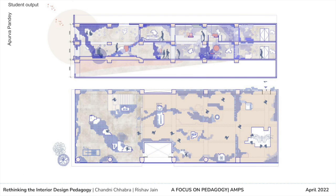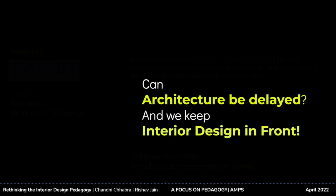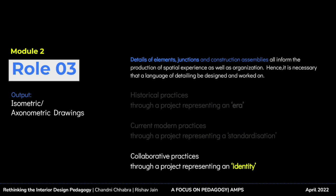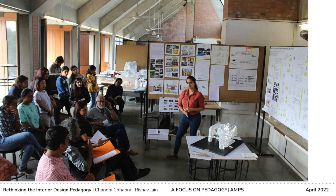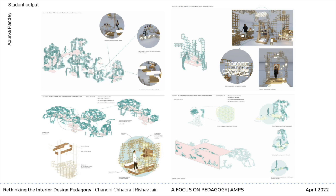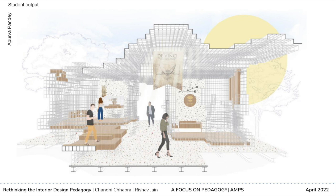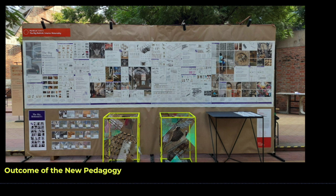The focus here was on organizing and planning. Students were asked to define the layout in the given site representing standardization, and to study a master architect of their choice and then modulate the drawings and details of their design through the lens of that architect. Organization and space planning involved a systematic laying out of space-making elements. Considering that some design intents involve an array of elements while others require volumetric explorations, this visual composition leads to more clarity in design. The third role focused on collaborative practice, with the project type being a design project with no predetermined site context. Outputs included sectional perspectives, isometric drawings, and models. Details of elements, junctions, and construction assemblies all inform the production of spatial experience and organization, making it necessary that a language of detailing be designed and worked on.